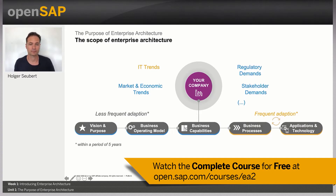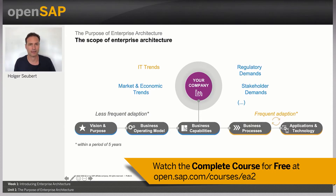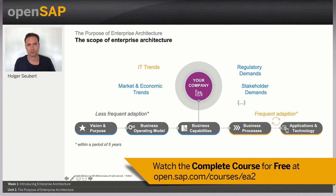Your company obviously does not live in isolation. There are constant external factors that might require a change or adaptation of your company's building blocks. For example, there are constantly new IT trends such as machine learning, blockchain, and IoT. On the other hand, there are also constantly changing market and economic trends such as mobility or dematerialization as a result of continuing digitalization. And of course, stakeholders like customers or employees have a diverse and changing set of interests and requirements.